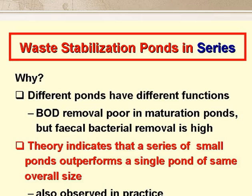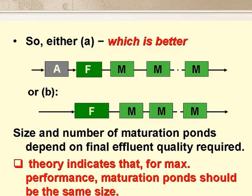We know from theory, and we can observe this in practice as well, that a series of small ponds outperforms a single pond of the same overall size. So we have either series A or series B shown on the slide, and there's a preference for series A, as BOD removal in anaerobic ponds is so good.